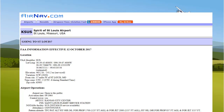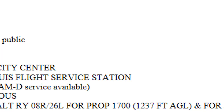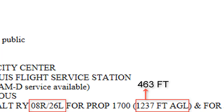The pattern altitude differs for prop planes and jets. For props, the pattern altitude depends on which runway you are landing on. For runway 08 right or 26 left, the traffic pattern is 1237 feet AGL. If you add that to the airport elevation of 463 feet, the altitude is 1700 feet, which you can see is also listed.